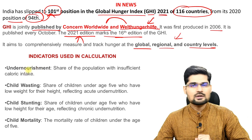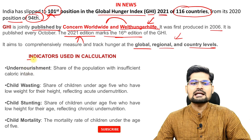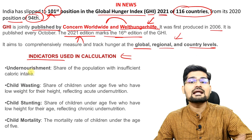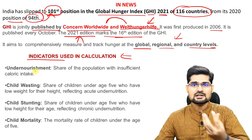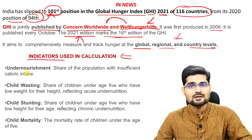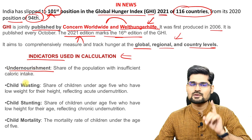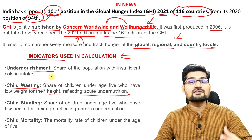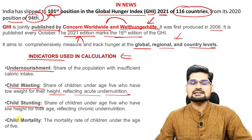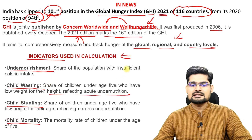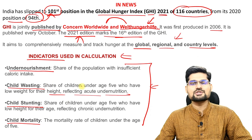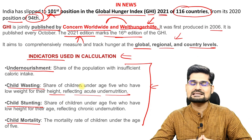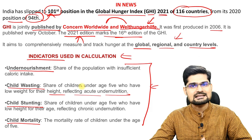The important thing is the indicators used in this calculation. There are four factors: undernourishment, child wasting related to the height and growth of the child, child stunting, and child mortality. These are the four major indicators which are taken into consideration while computing the Global Hunger Index.